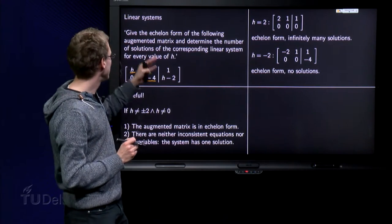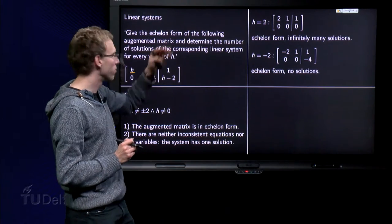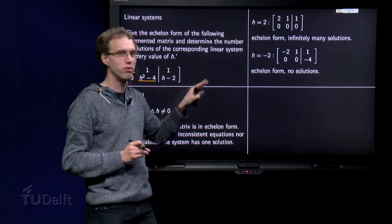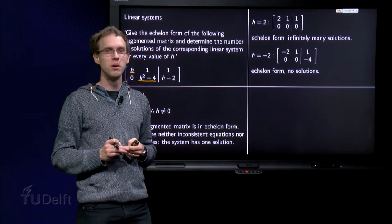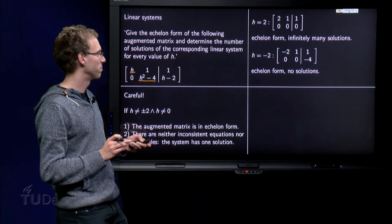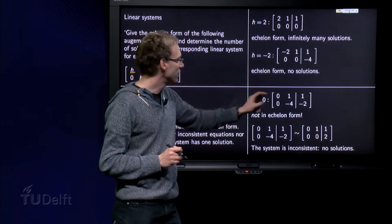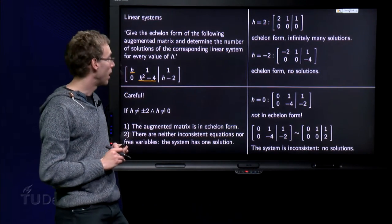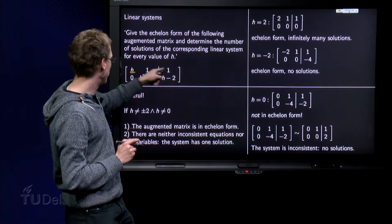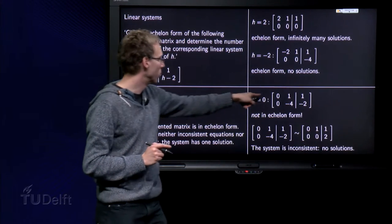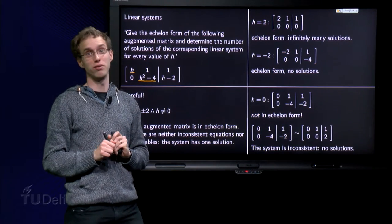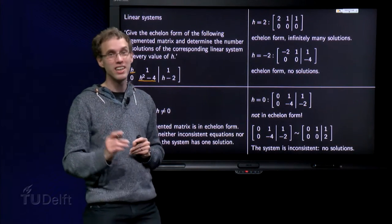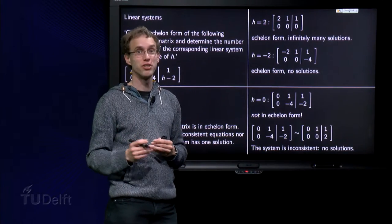Now we start to wonder, isn't it a silly question, give the echelon form of the augmented matrix, it is in echelon form all the time. What a stupid question. Well, let's look at h equals 0. For h equals 0, something special happens. Just plug it in, 0, 1, 1, 0, minus 4, minus 2. Now we are over here, and now we are not in echelon form. So the augmented matrix is not in echelon form for h equals 0.